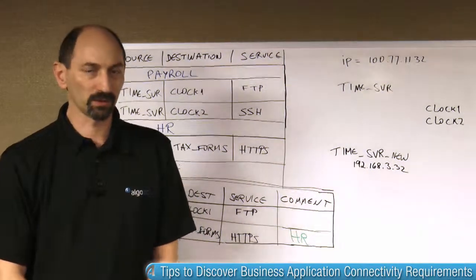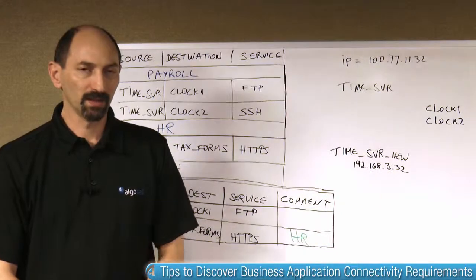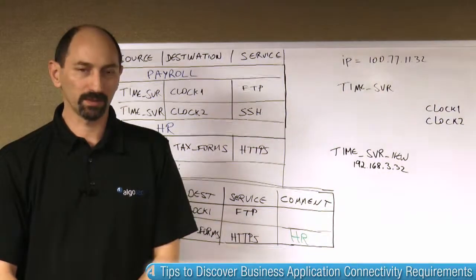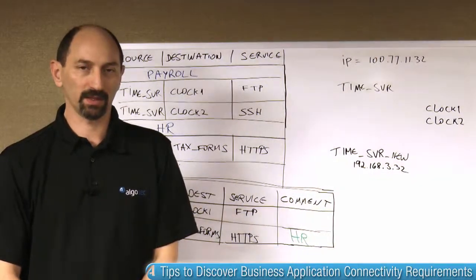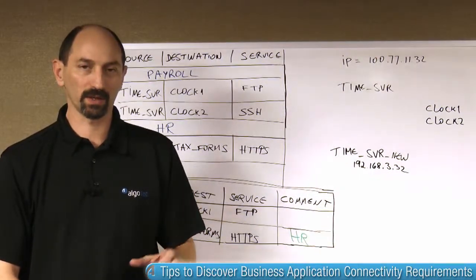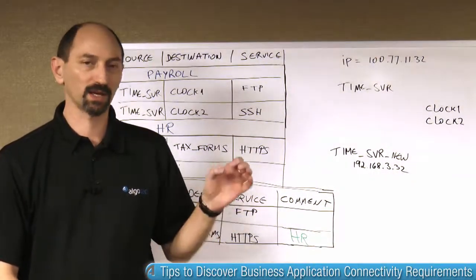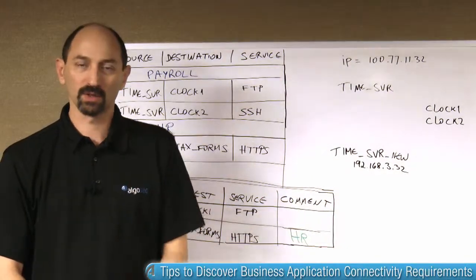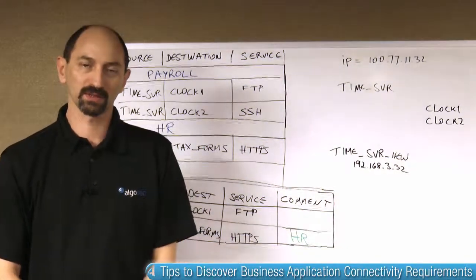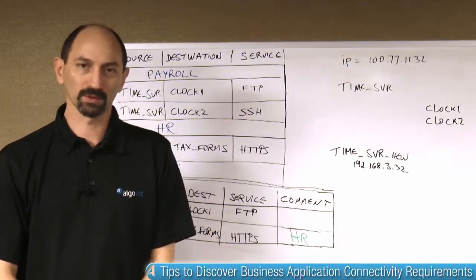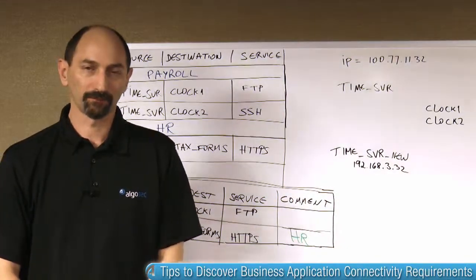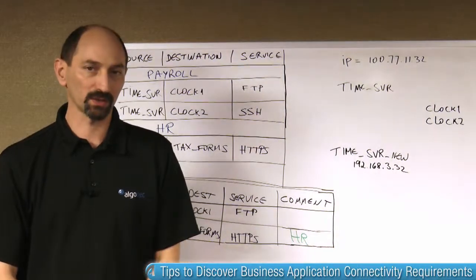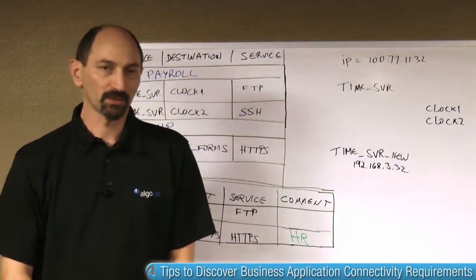Remember, each traffic flow that goes through your system is probably supported by one or more firewall rules on the various firewalls in your estate. Perhaps you have a process whereby you use functionalities on the firewalls to document which applications the rule supports, and how you do it really depends on what sort of firewalls you have.